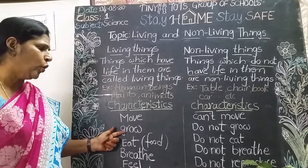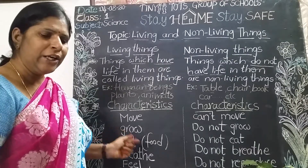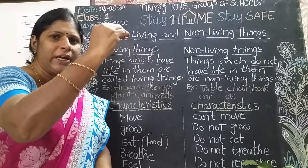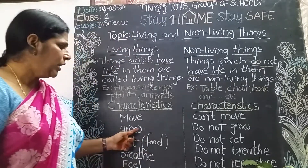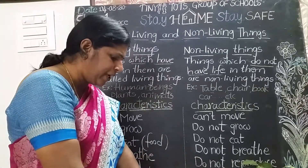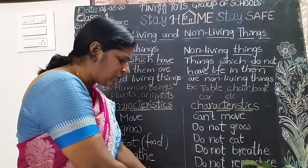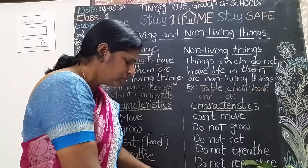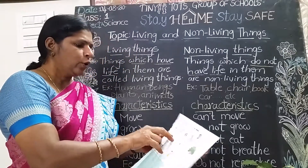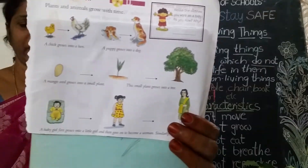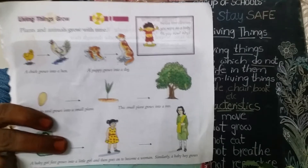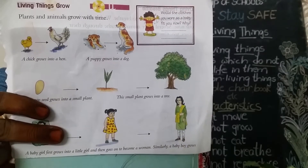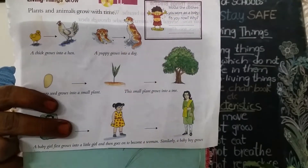The next characteristic feature is growth. When you were in LKG, you were a very small child. Now you are growing slowly, like your brother or sister. All living things can grow. A small puppy grows into a dog, a small kitten grows into a cat. A small chick grows into a hen. A small mango seed grows into a small plant, and a small plant grows into a tree. All living things grow.